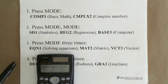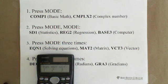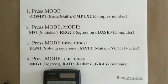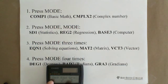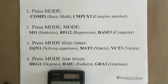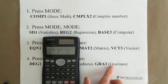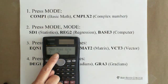The second MAT2 is matrix, the third VCT3 is vector, and press mode again the fourth time. You can see the degree: DEG is degree, RAD is radians, and the third GRA3 is gradians. Mostly we use degree and radians.